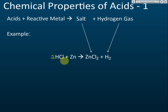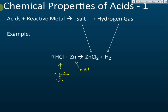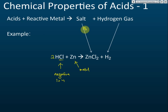The salt formed is between the negative ions of the acid and the metal. So the negative ions of the acid combine with the metal — in this case zinc and chloride — to form zinc chloride, which is a salt. We will discuss salts in the next chapter, but for now, just know that salt forms from the negative ions of the acid and the metal.